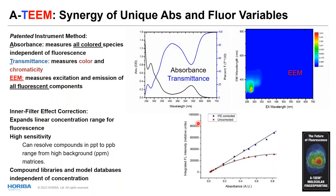A key patented feature is correction of inner filter effects. Previously, fluorescence analytical spectroscopy was held back because the light transferring through the absorption path and leaving the measurement cell is absorbed before reaching the detector. We correct for this on the fly as we acquire data simultaneously. This allows higher sensitivity, broader concentration ranges, and — critically — spectra representing pure chemical species that can be stored in libraries and databases.